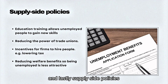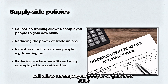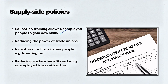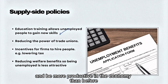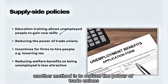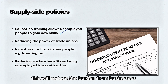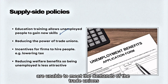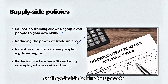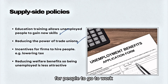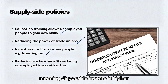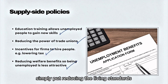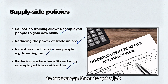Lastly, supply-side policies: education and training allow unemployed people to gain new skills, improving the productive capabilities of the country overall. Another method is to reduce the power of trade unions, which reduces the burden on businesses for hiring people as there is more labour flexibility, since some smaller businesses are unable to meet trade union demands and decide to hire fewer people. Governments can also give incentives to work, such as lowering income tax to increase disposable income, or reducing welfare benefits to make being unemployed less attractive.